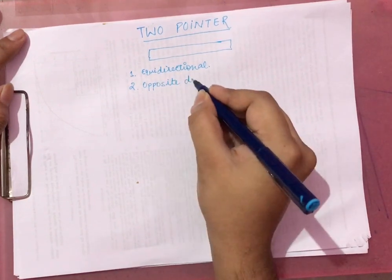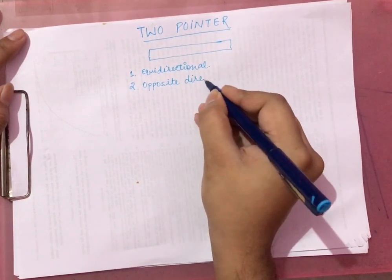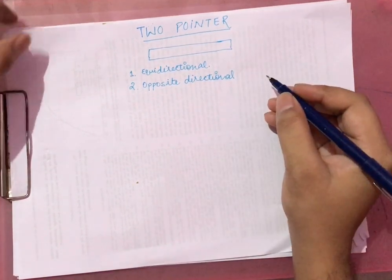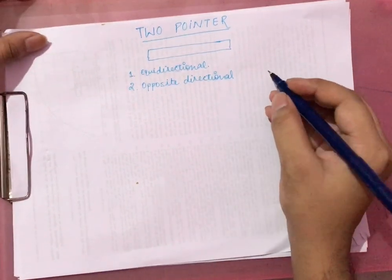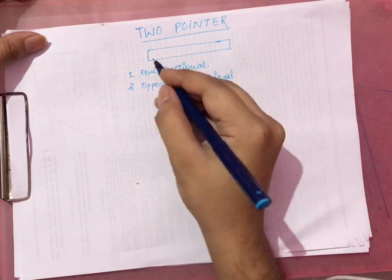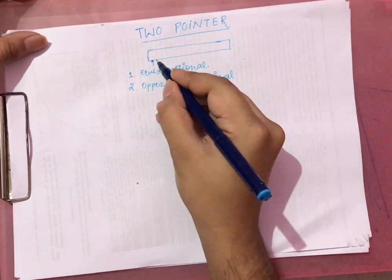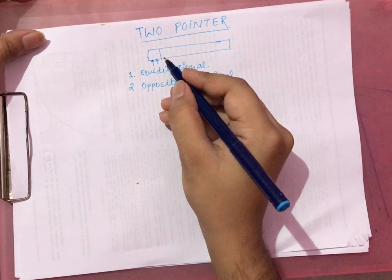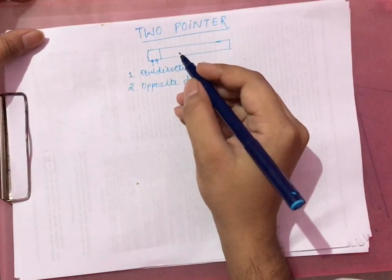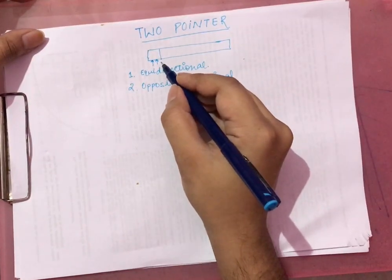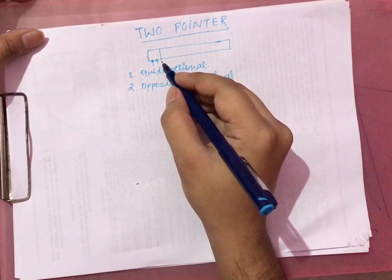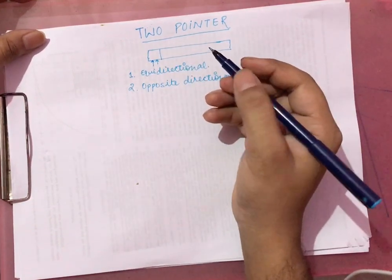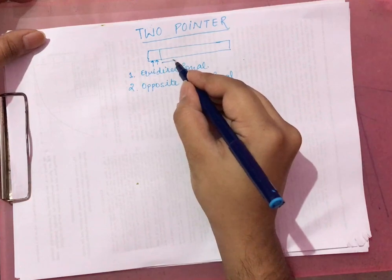In the equidirectional approach, both pointers start from the beginning of an array. One pointer is a slow pointer and the other is a fast pointer, and they move in the same direction.